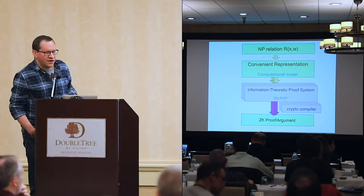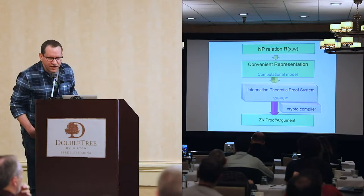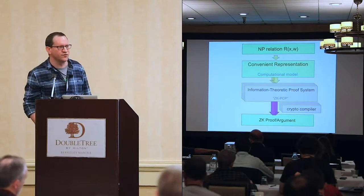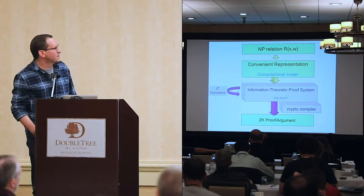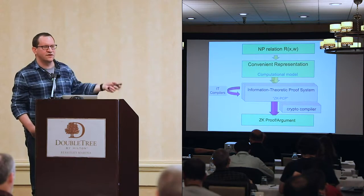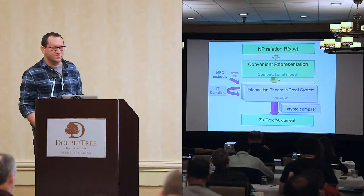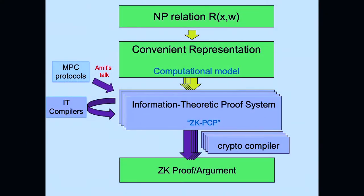There are many different kinds of information-theoretic proof systems and many different kinds of crypto compilers. The same proof system can be matched with different compilers — many combinations are possible. We also have information-theoretic compilers that allow moving between different kinds of information-theoretic proof systems, and we can even convert information-theoretic MPC protocols into information-theoretic general proof systems.